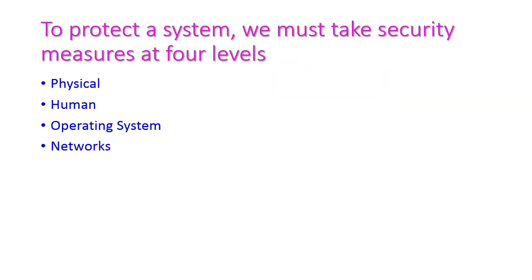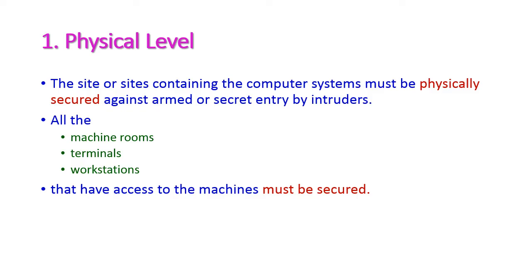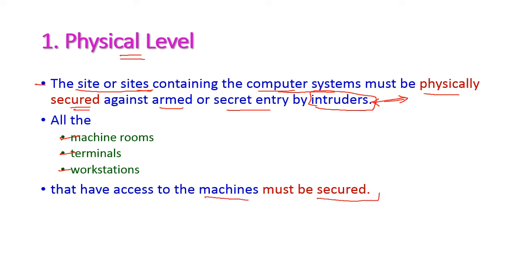To protect a computer system, we must take security measures at four levels. The first is the physical level. The site or sites containing the computer system must be physically secure against unauthorized or secret entry by intruders. All machine rooms, terminals, and workstations that have access to the machines must be secured from attackers.